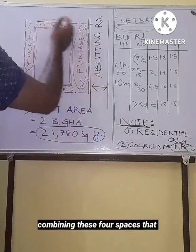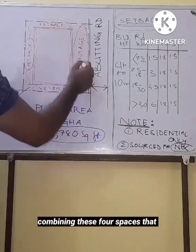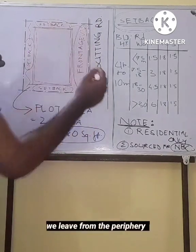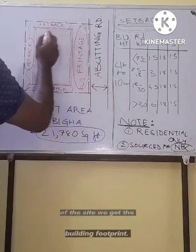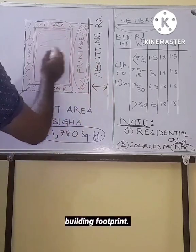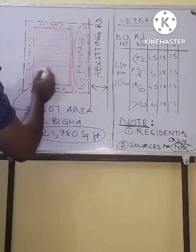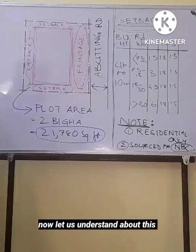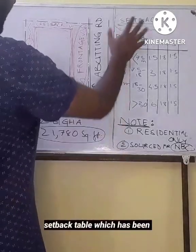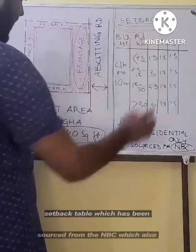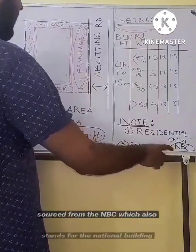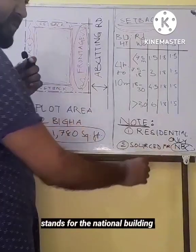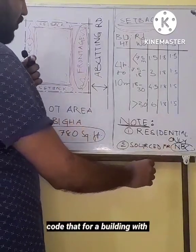Combining these four spaces that we leave from the periphery of the site, we get the building footprint. Now let us understand about this setback table which has been sourced from the NBC, which stands for the National Building Code. For a building with height up to 10 meters, which is usually a G plus 2 building.